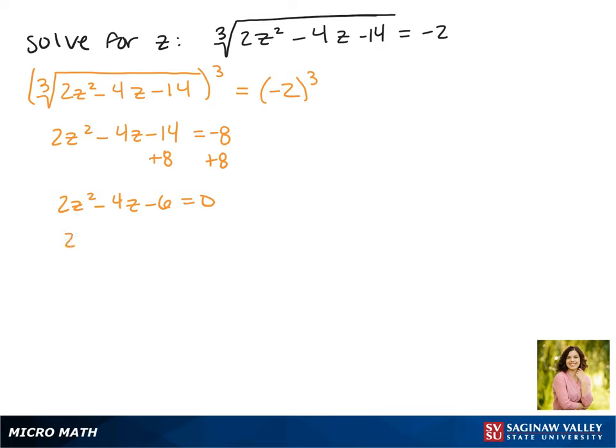All of these coefficients have a factor of 2, so we are going to go through and divide everything by 2. And now we can factor this trinomial. The factors of negative 3 that make negative 2 are negative 3 and positive 1.